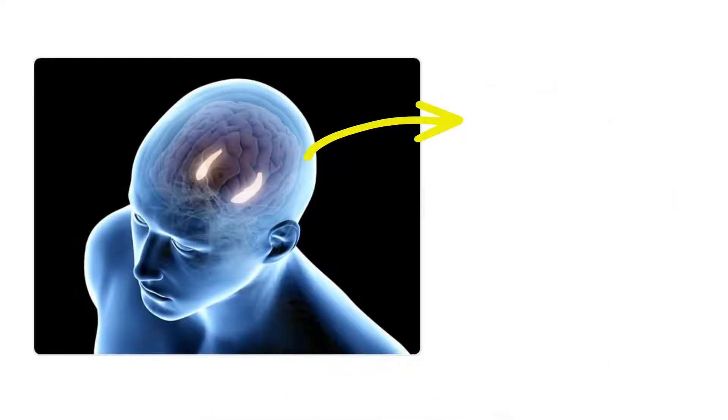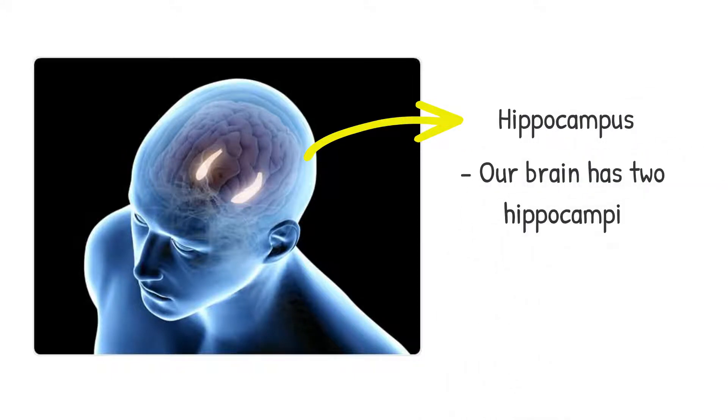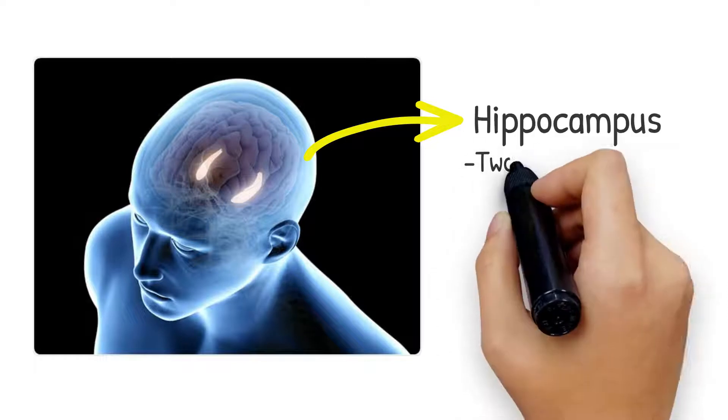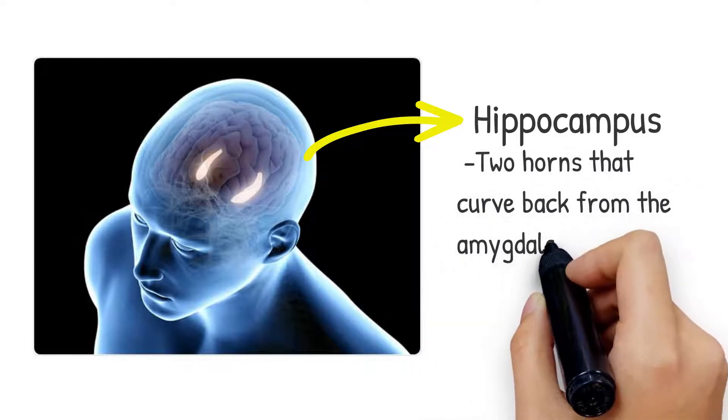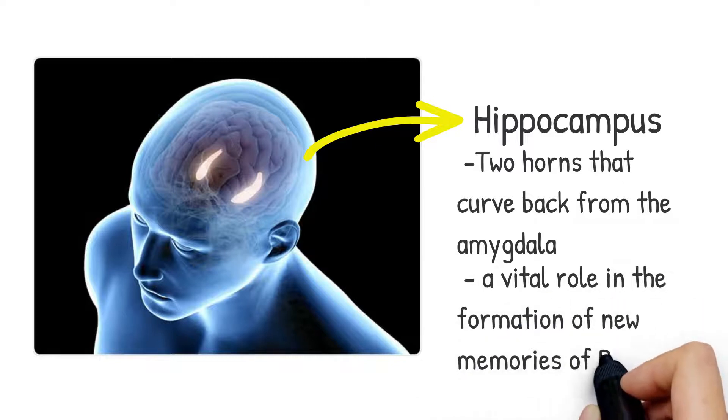The seahorse-like structure is the hippocampus. Our brain has two hippocampi, located in each hemisphere of our brain. It has two horns that curve back from the amygdala. It plays a vital role in the formation of new memories about past experiences.